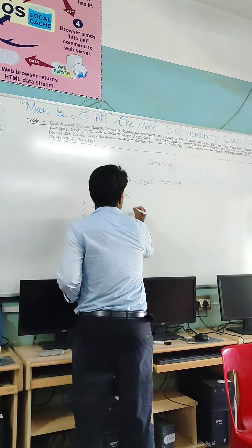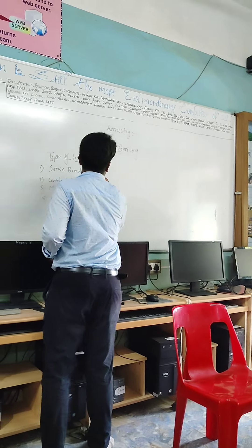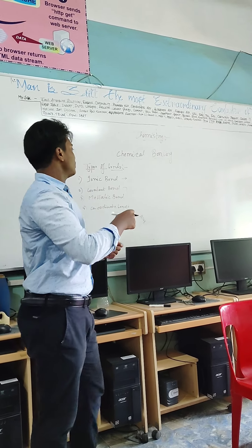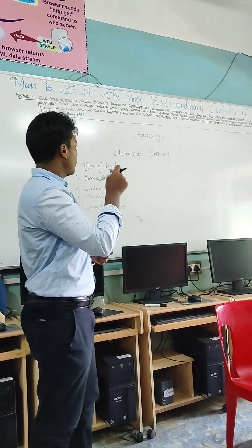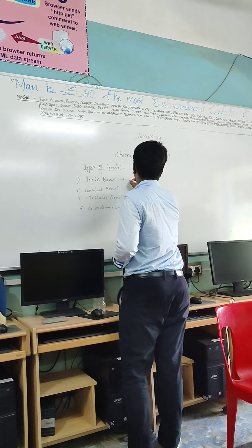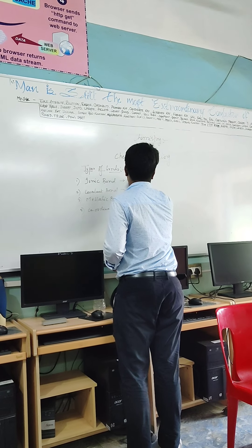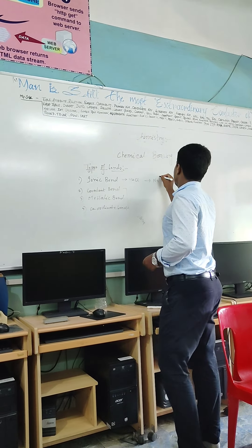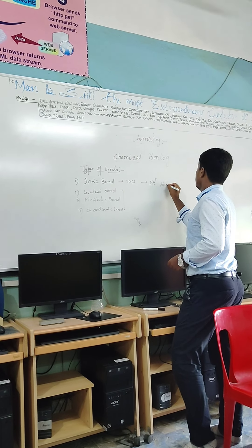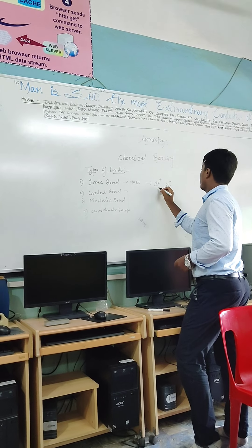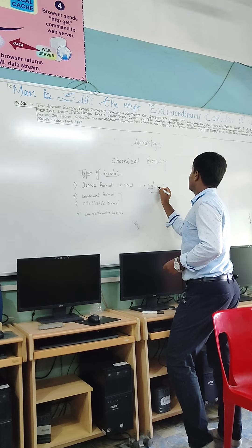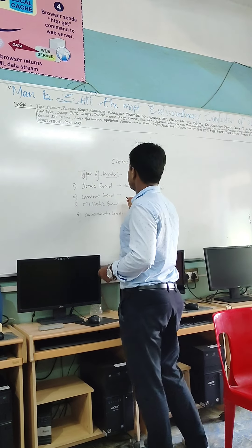Ionic bond forms when electrons directly transfer from an electronegative atom to an electropositive atom. For example, we can say NaCl, in which Na+ is cation and Cl- is anion. The bond forms when these two ions interact with each other.